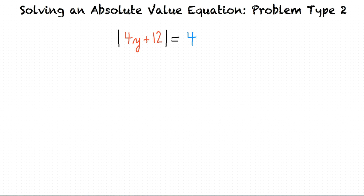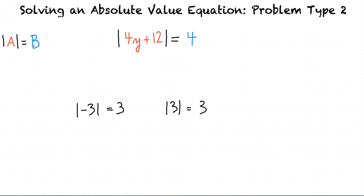We will think of this absolute value equation as being in the form: absolute value of a equals b. An absolute value of a number is its distance from 0 on a number line, so it is always positive, and any non-zero absolute value will always have two numbers that have that value. For example, the absolute value of negative 3 is equal to 3, but also the absolute value of positive 3 equals 3. Both 3 and negative 3 have an absolute value of 3.